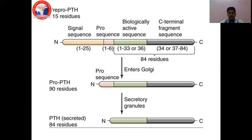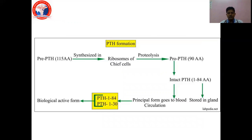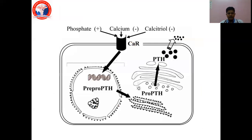Regarding the synthesis of parathyroid hormone, it is produced inside the chief cells as a 115 amino acid sequence called pre-pro-parathyroid hormone. It then enters the Golgi apparatus and becomes 90 residues, called pro-parathyroid hormone. Finally, it enters the secretory granules where it is further truncated to 84 amino acids — this is the active form of parathyroid hormone, stored in secretory vesicles for release into the blood.